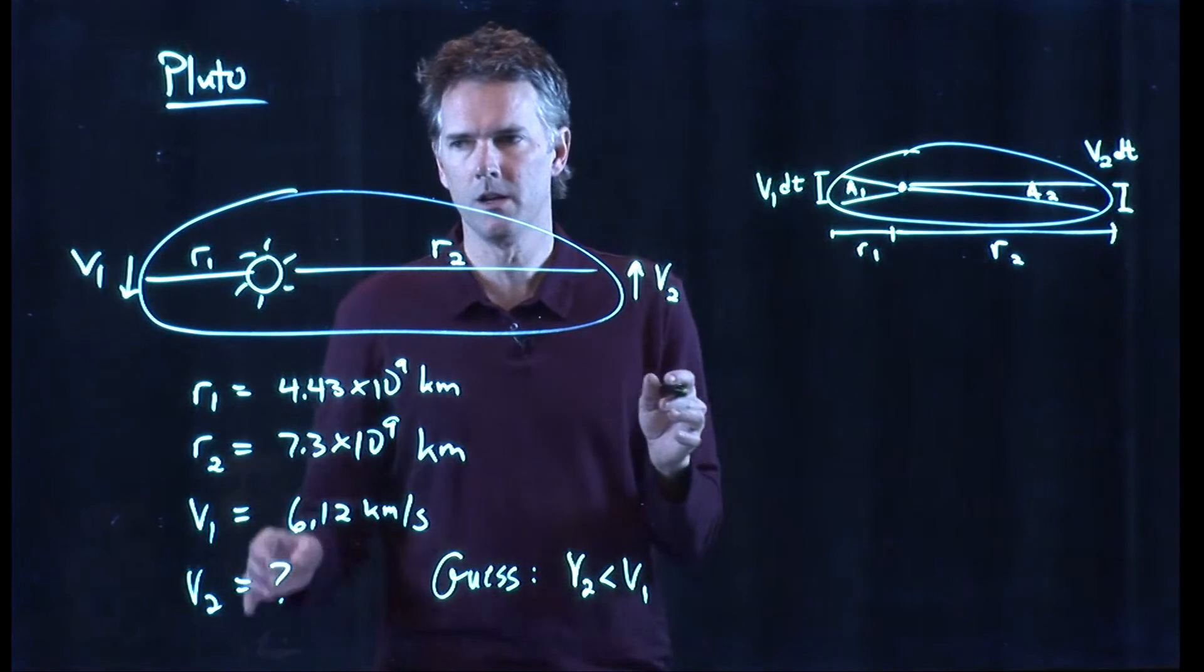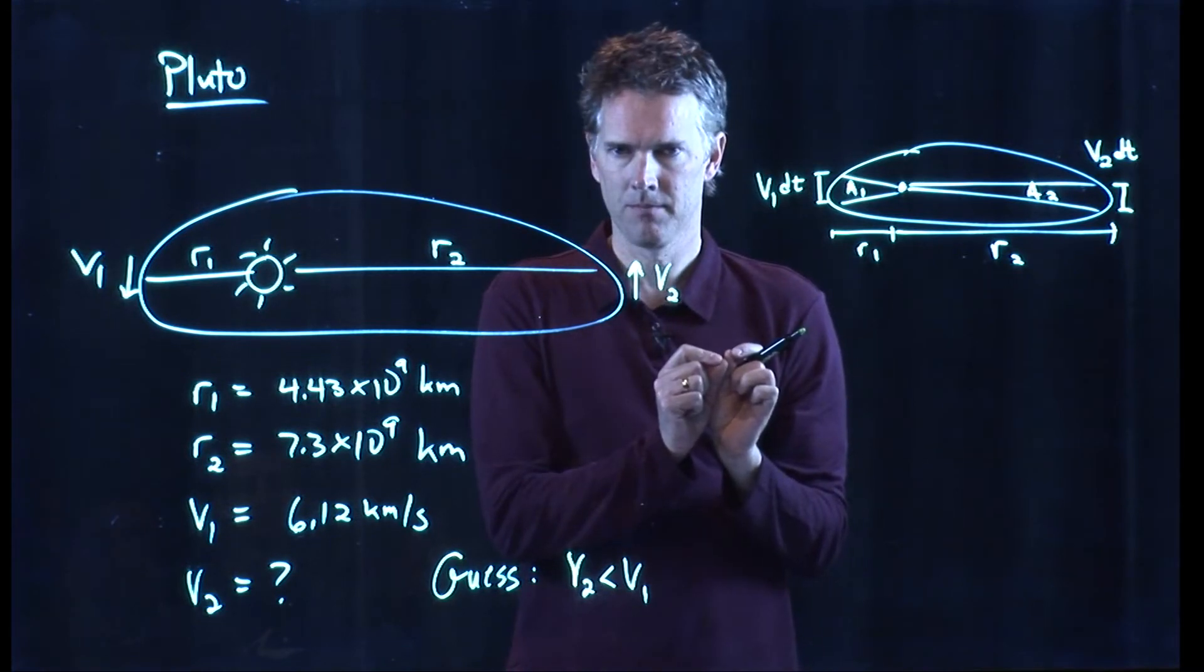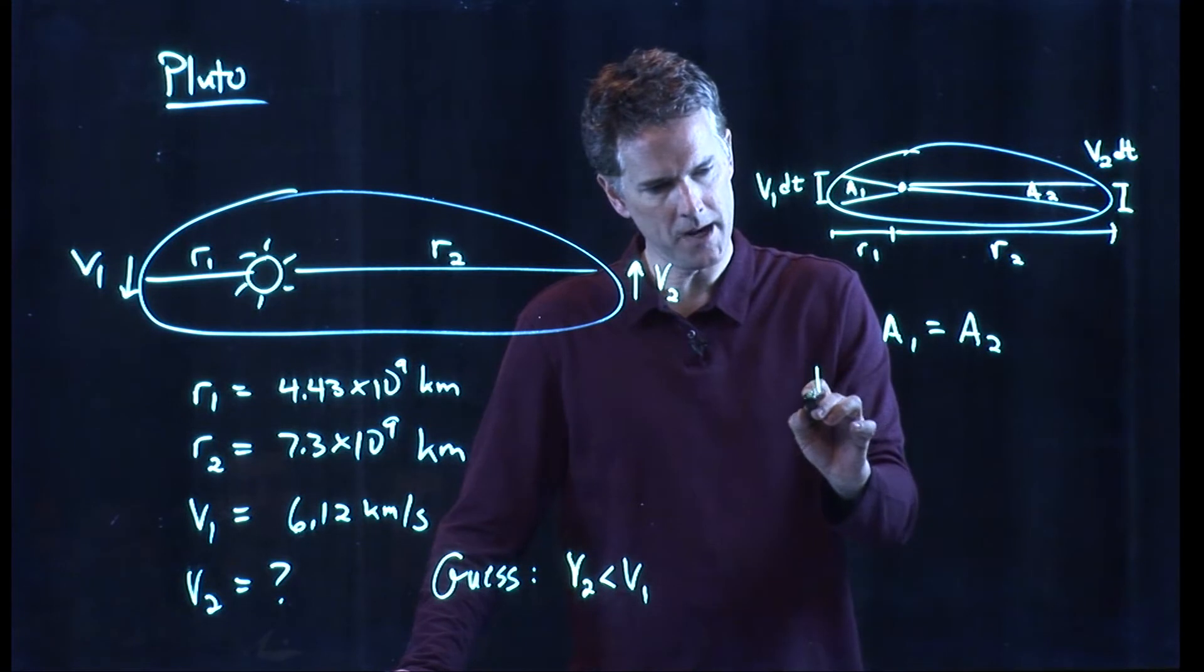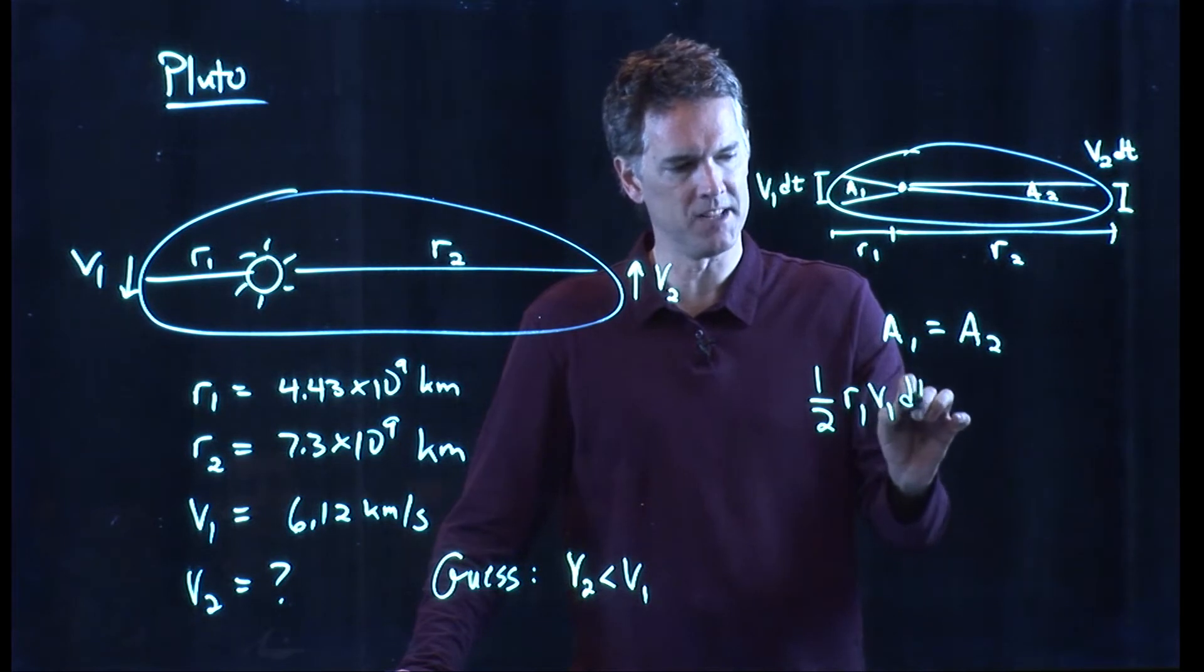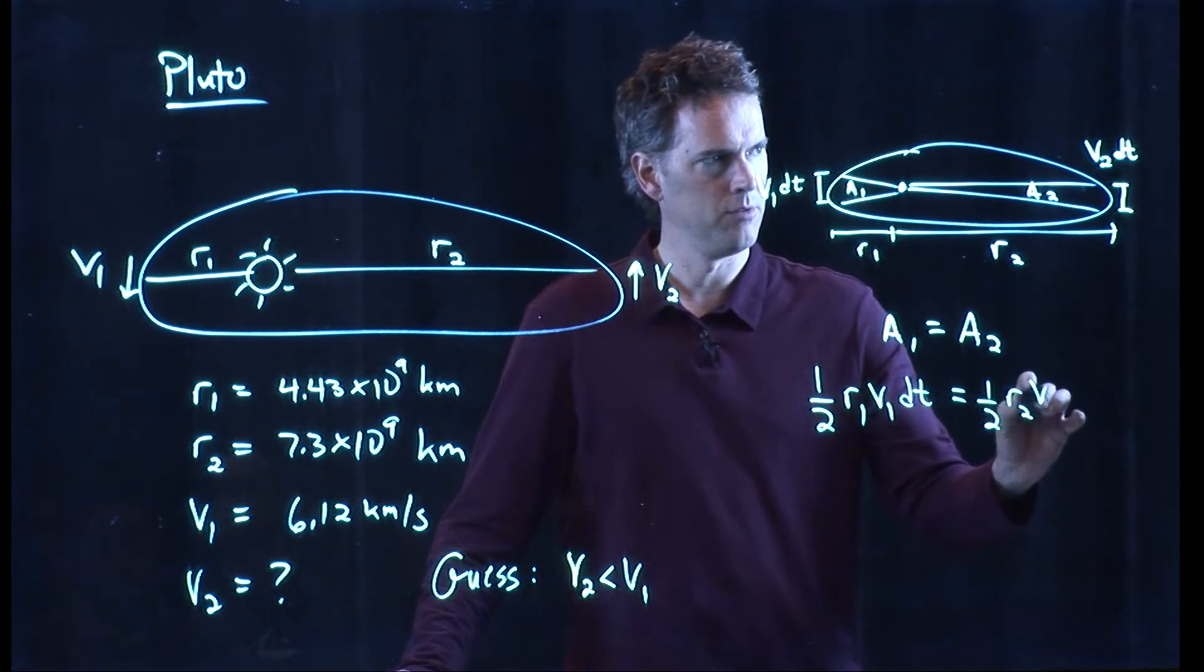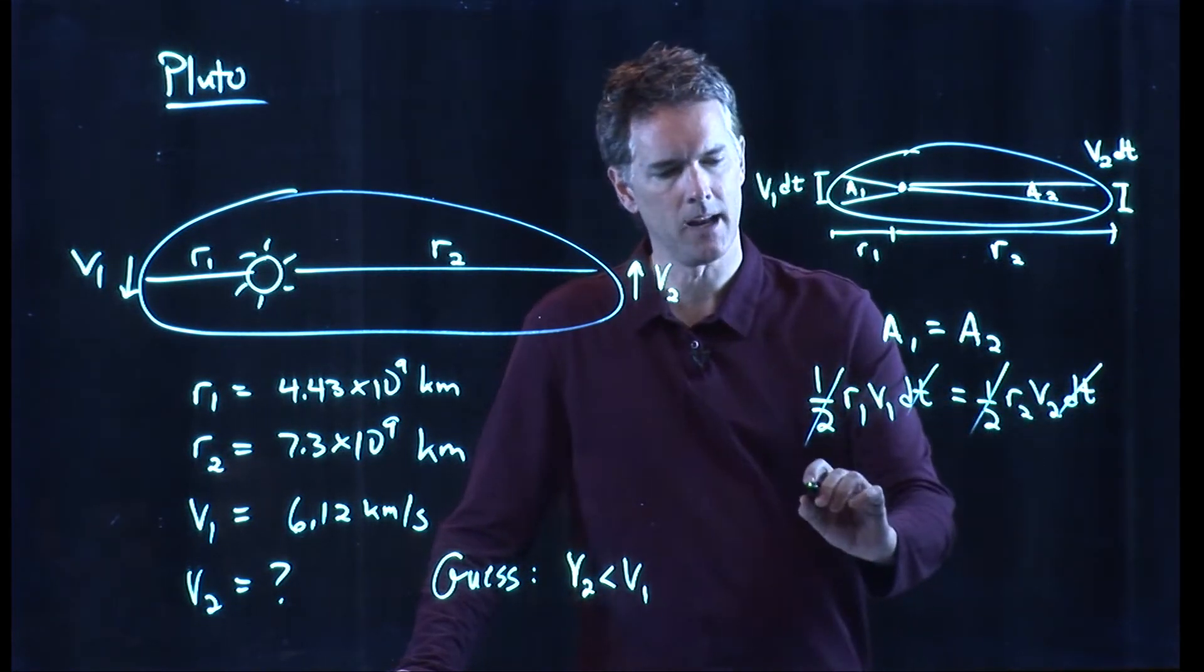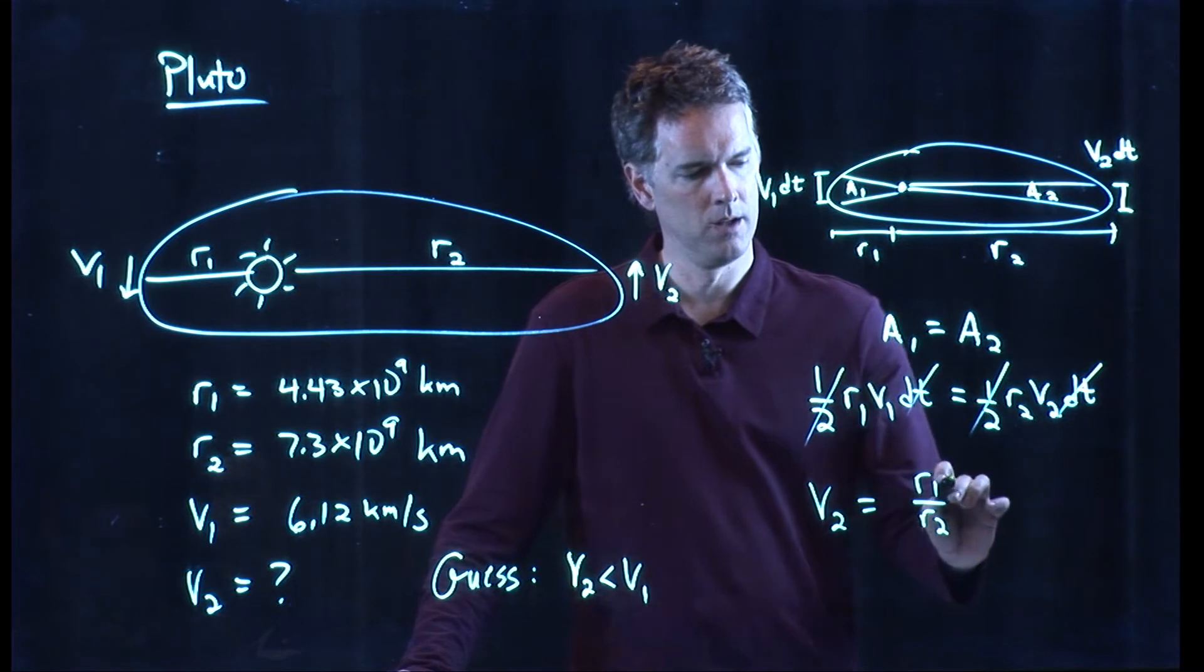And what Jamie said was, if Kepler's second law is going to hold, those DTs, those little deltas, have to be exactly the same. Right? And so if the areas are the same, then what do we have? We know the area of a triangle. It's just one-half the base times the height. R1 times V1 times DT. What about A2? It's one-half R2 V2 DT. Cross out the halves. Cross out the DTs. I get V2 is equal to R1 over R2 times V1.